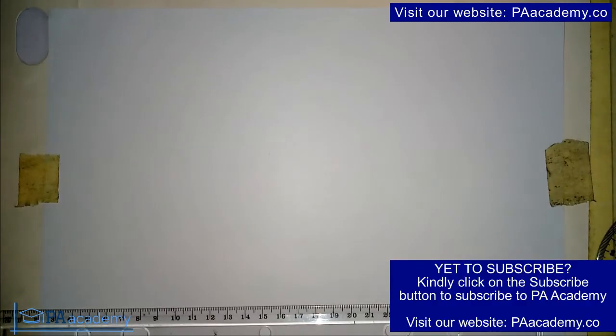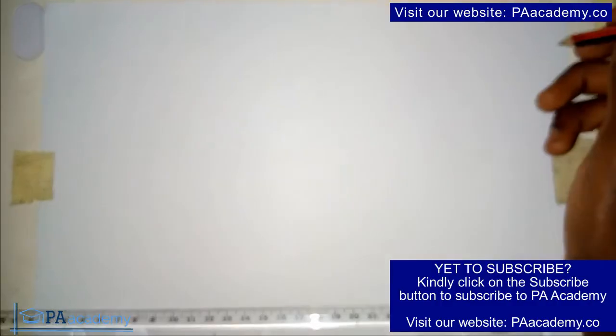Hello everyone and welcome to PE Academy. In this video I'm going to be showing you how to draw a polygon when you are given the length of the diagonal. So if you are asked to construct a polygon, this principle works for any polygon and you are not given the length of the sides, just the length of the diagonal. In this video we are going to be using a pentagon as an example.